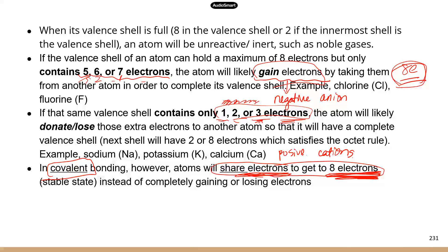If atoms completely gain or lose electrons, that's an ionic bond. If you want to know more about the different types of chemical bonds, go to the video for TEAS 6, where I talk about in detail the three types of chemical bonds: ionic bond, covalent bond, and hydrogen bond.